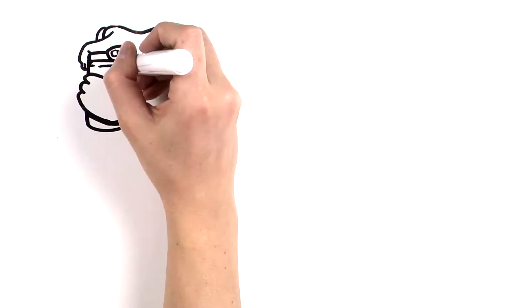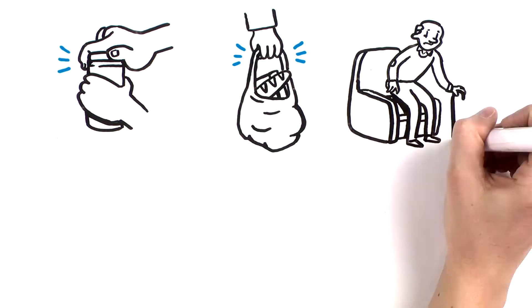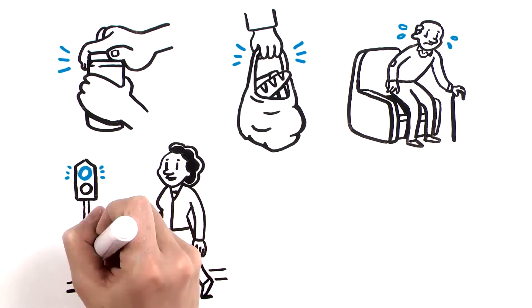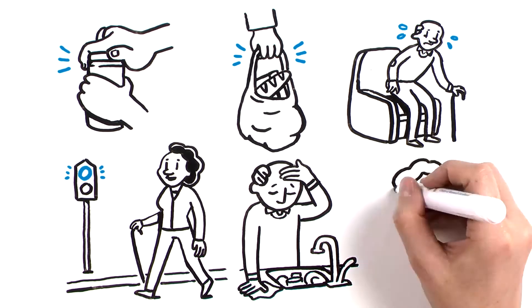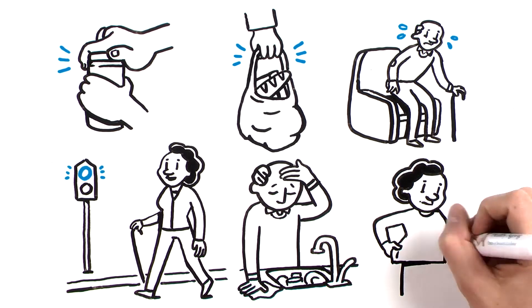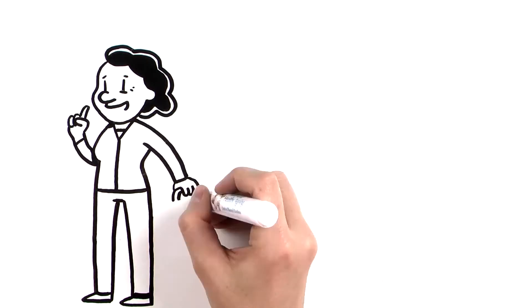Such as struggling to open a jar or carry heavy groceries, stand up after you have sat down, cross the street quickly enough, or complete tasks without frequently needing to stop to rest in the middle, or if you lose weight without meaning to. There are many steps you can take to reduce your risk of frailty.